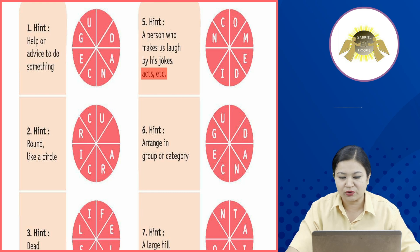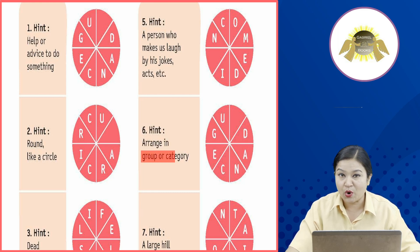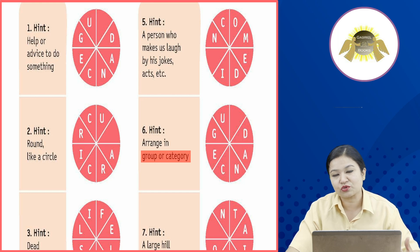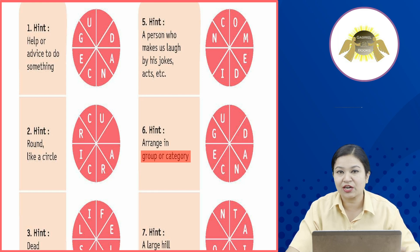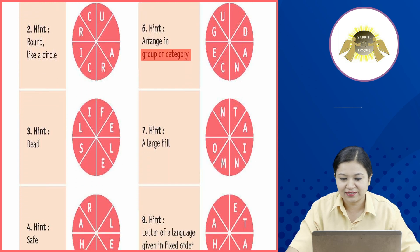Sixth hint: arrange in group and category. किसी चीज को arrange करना, उसको category में रखना — तो आप यहां पर S लिखेंगे और circle को complete करेंगे।